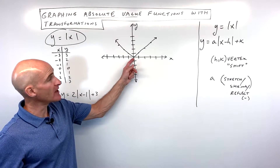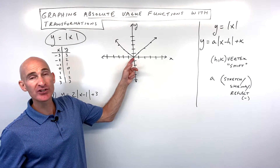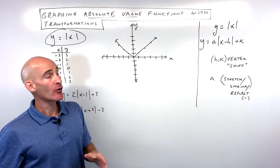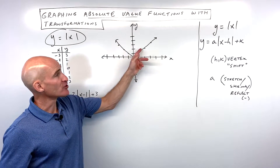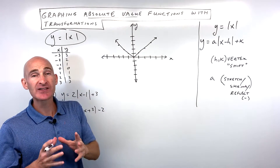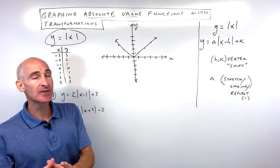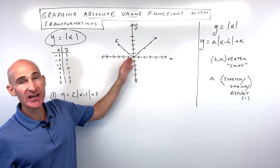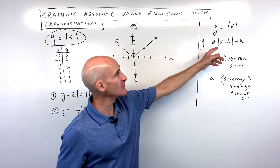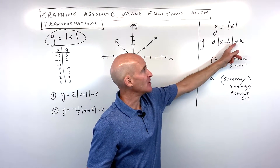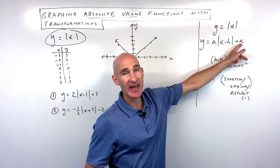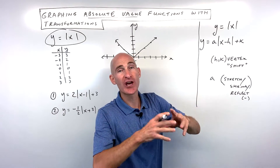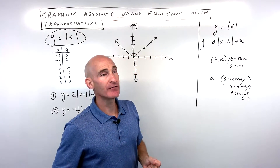Notice this point at the origin, (0, 0), where the graph bends — that real sharp corner — that's your vertex. We're going to pay close attention to that vertex point because that's going to be h and k in the more generalized way of writing the function.